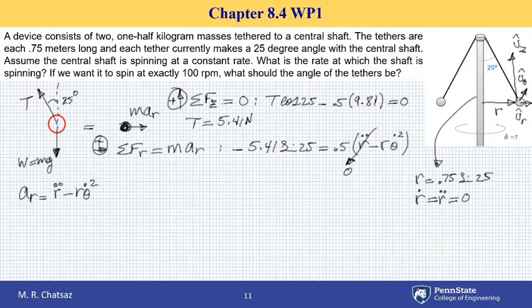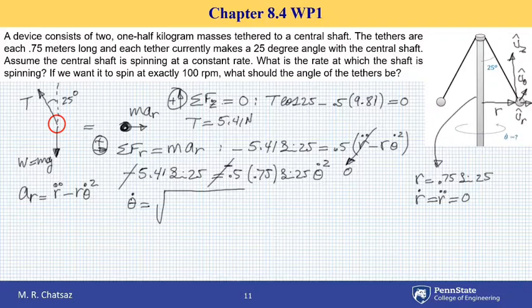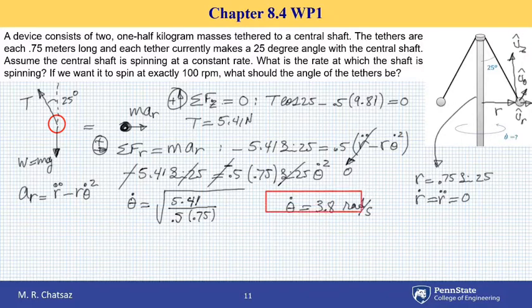So this goes to zero. Then I have an equation with one unknown. After plugging for r, I get minus 5.41 sine 25 equal to minus 0.5 times 0.75 sine 25, which is r, times theta dot squared. Minus cancels out from both sides. If I solve this equation for theta dot, it is a square root of 5.41 divided by 0.5 times 0.75. This gives us a rotational speed of 3.8 radians per second.